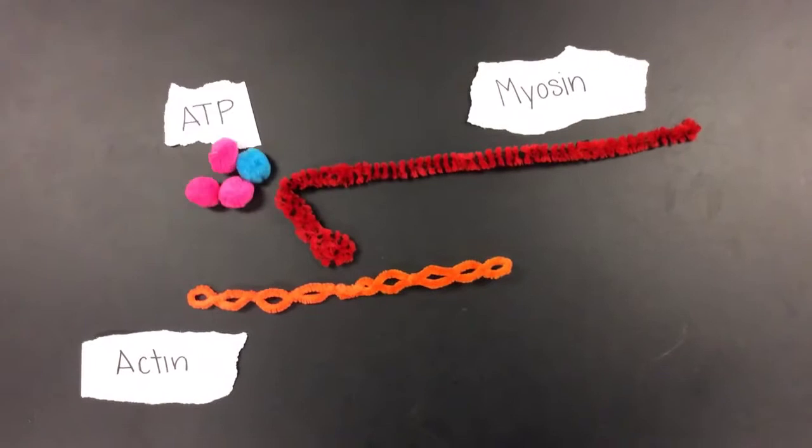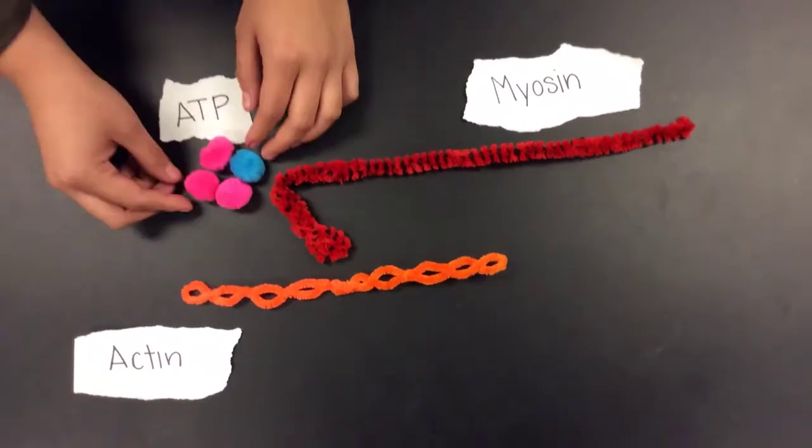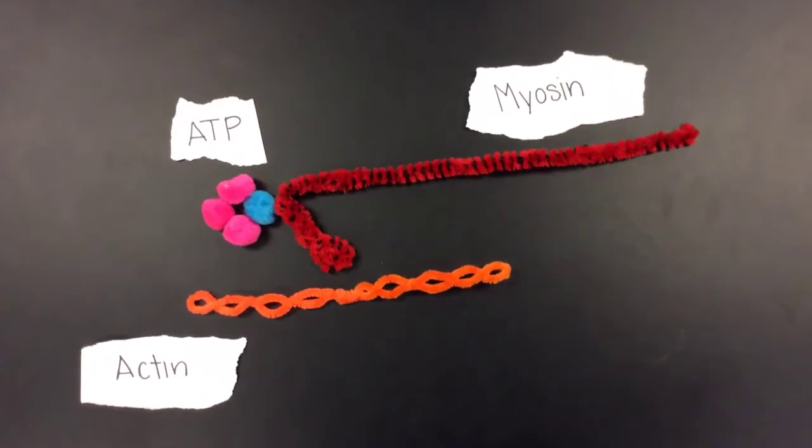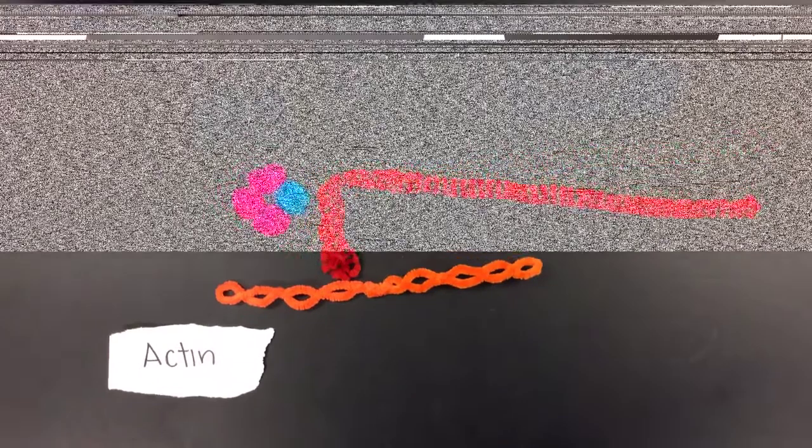The myosin head requires ATP in order for it to flex and to be able to attach and move the actin fiber, like this.